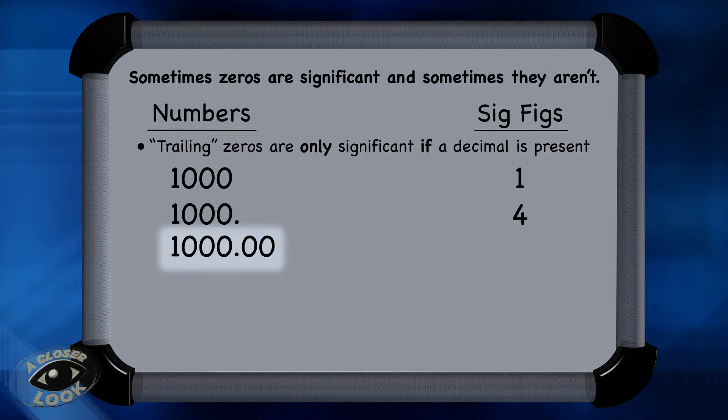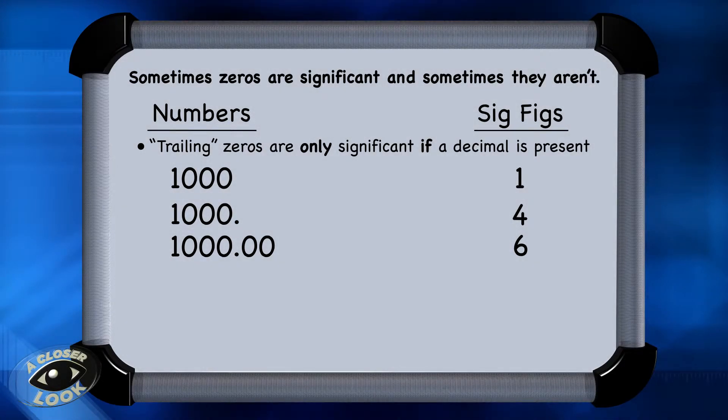Be careful with numbers like this, because remember, leading zeros are never counted as significant. But do count the last two zeros, because they are trailing zeros, and there's a decimal in the value.